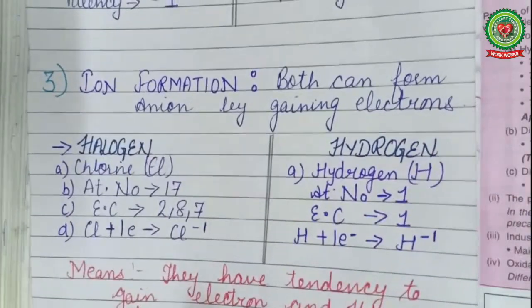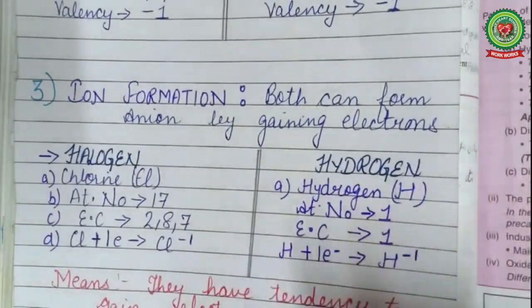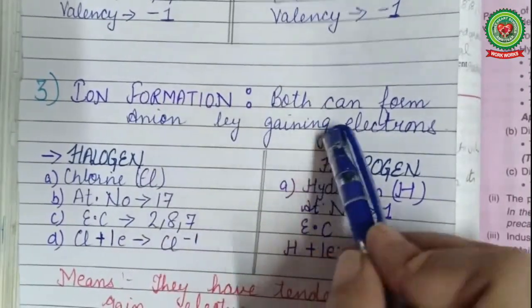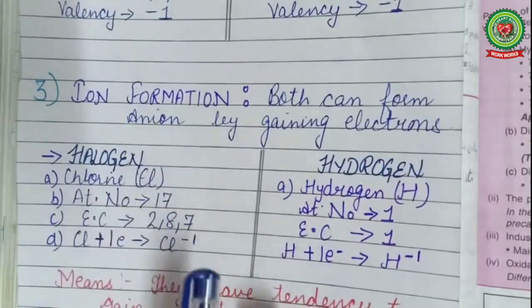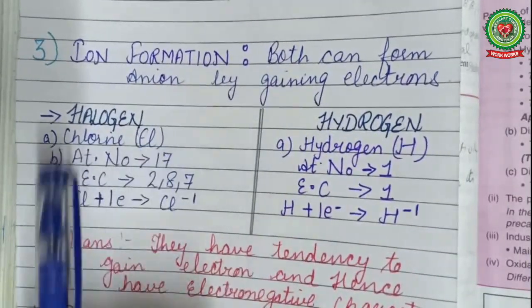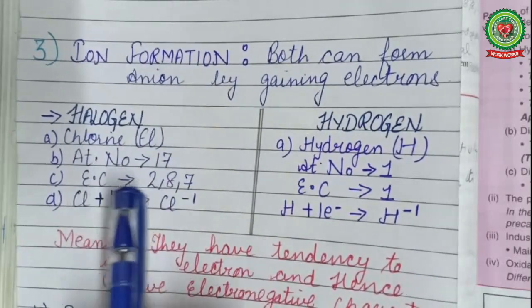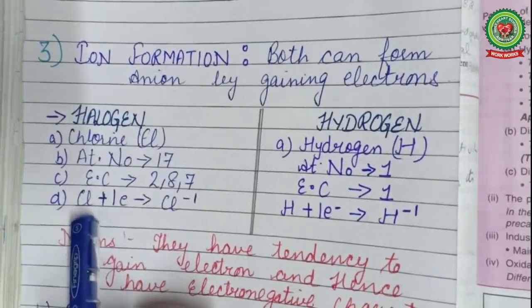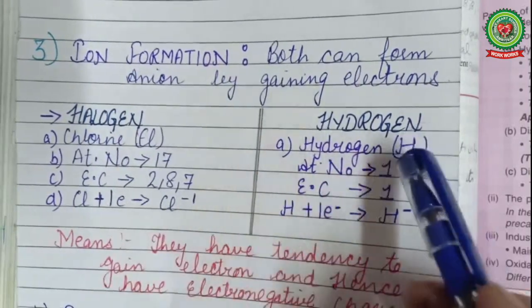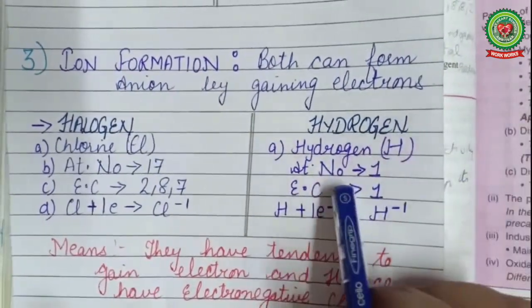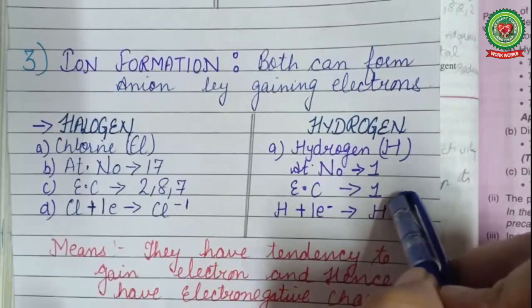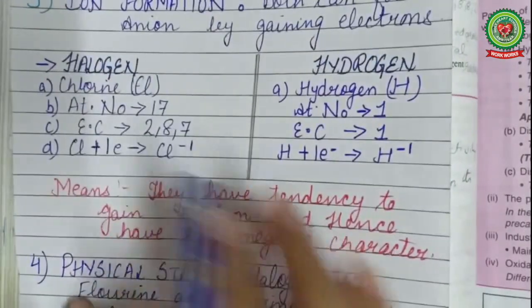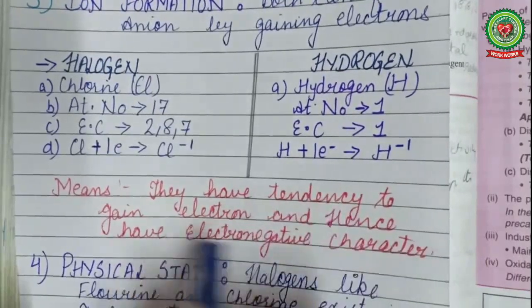The third similarity is ion formation. Both halogens and hydrogen can form anions by gaining an electron. Chlorine (symbol Cl, atomic number 17, configuration 2,8,7) gains one electron to form Cl⁻. Hydrogen (symbol H, atomic number 1, configuration 1 in the K shell) can gain one electron to form H⁻. They both have a tendency to gain electrons and therefore show electronegative character.